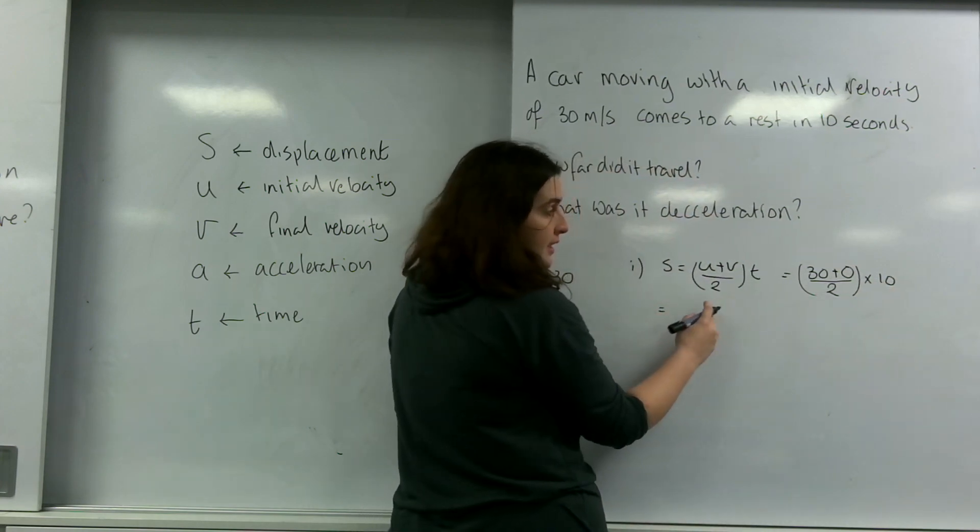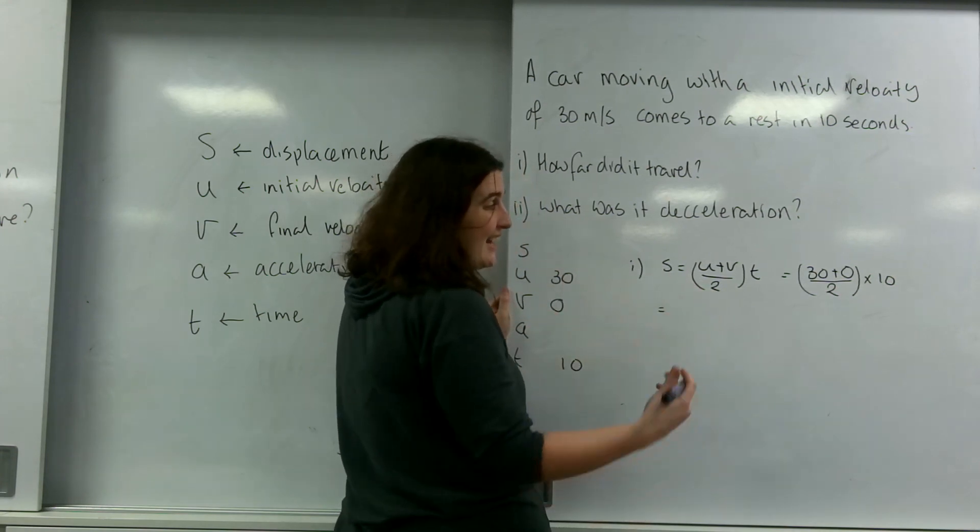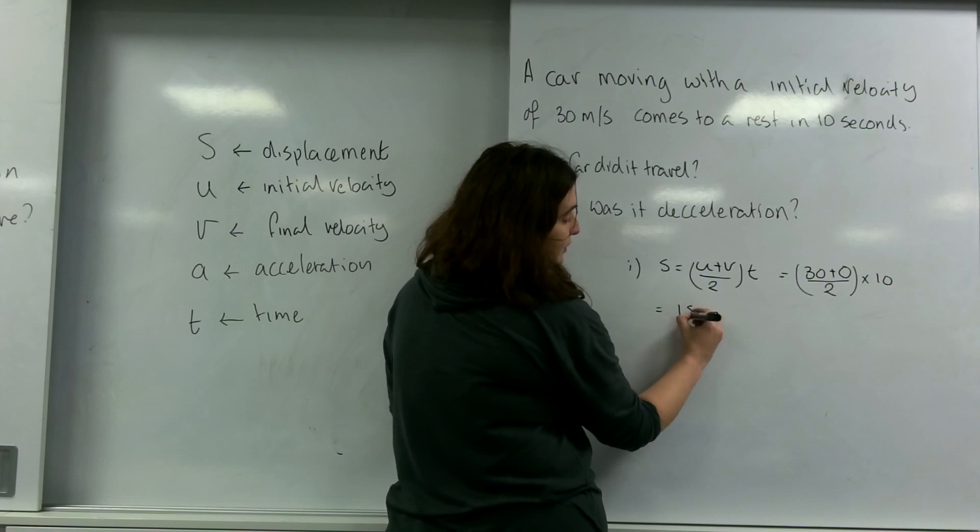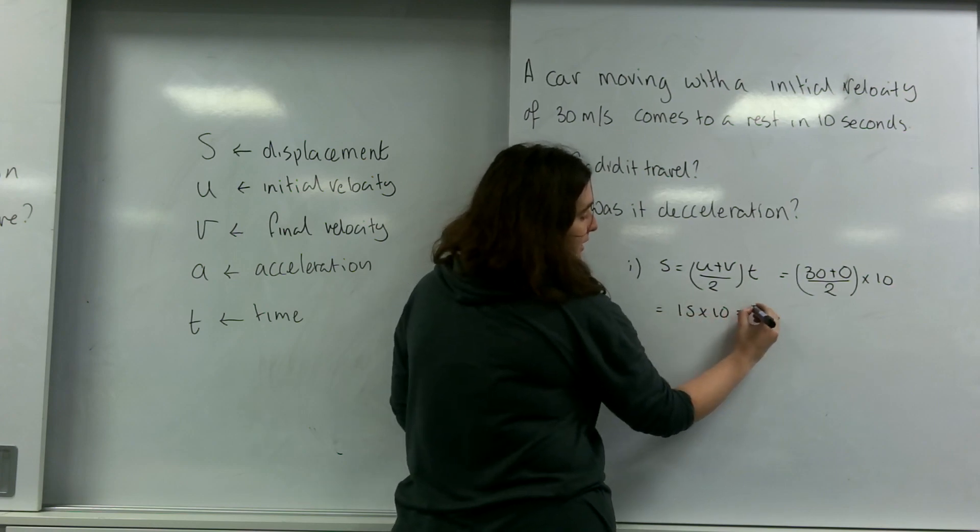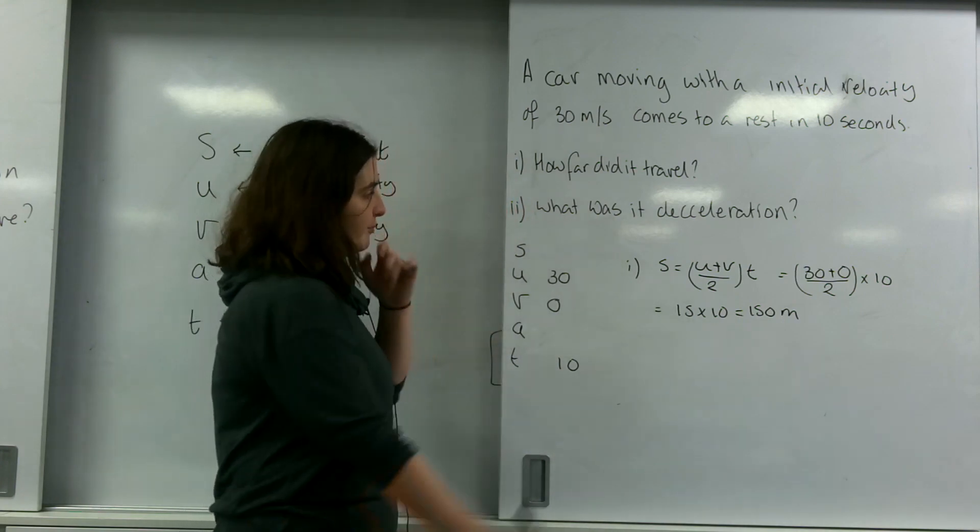So that's 30 plus 0, which is 30, divided by 2, which is 15. 15 times 10 is 150 metres. I'm going to put that in there.